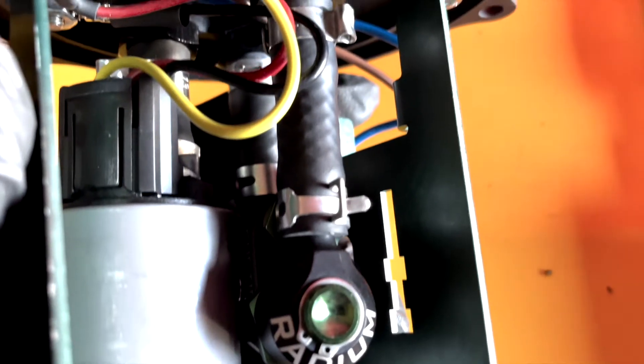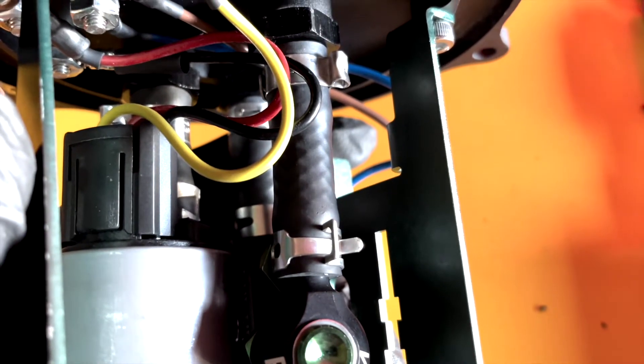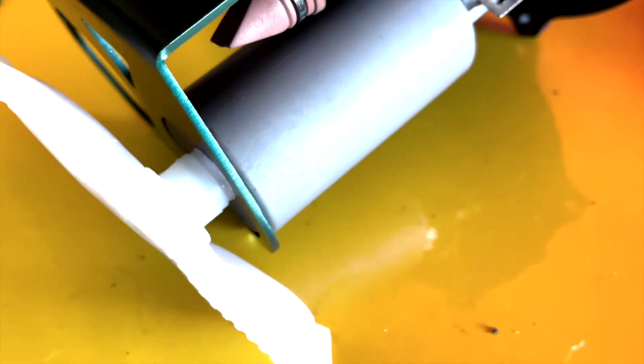Now, you are going to install the fuel pump hanger bracket so that it fits snugly with the fuel pump. Then, you are going to install the filter sock.